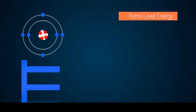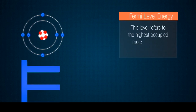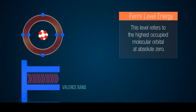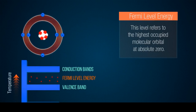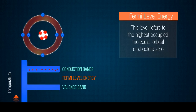Fermi level energy. This level refers to the highest occupied molecular orbital at absolute zero. It is usually found at the center between the valence and conduction bands. The particles in that state have their own quantum states and generally do not interact with each other. When the temperature begins to rise above absolute zero, these particles will start moving upwards and the states below the Fermi level become unoccupied.